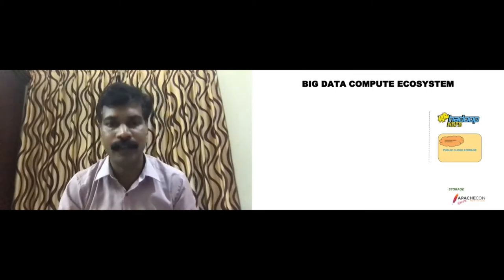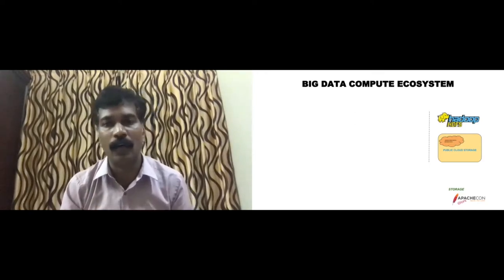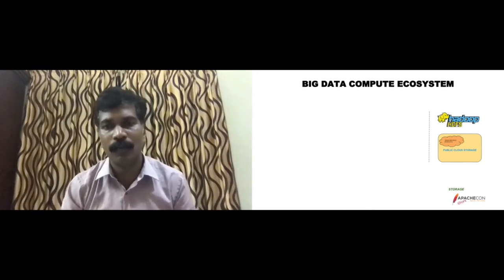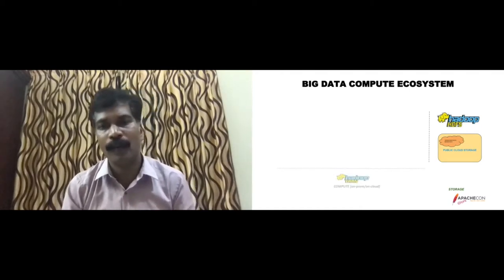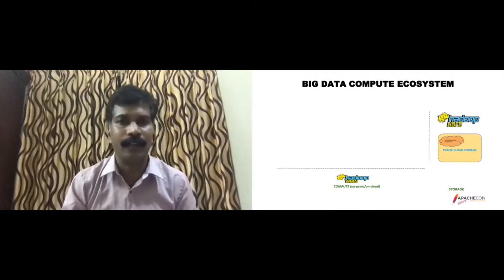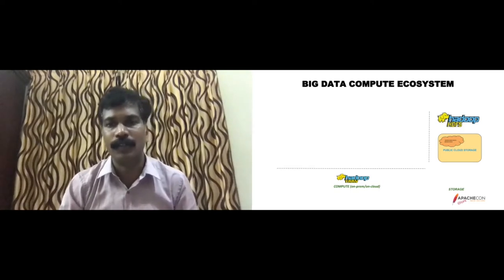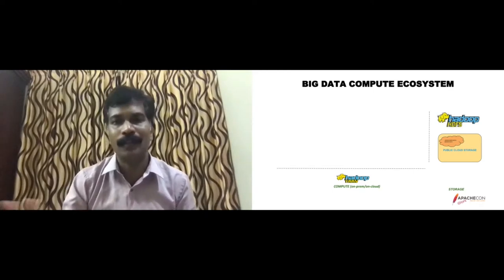We have data in data centers, and also much of the data is in private and public cloud storage such as S3, ABFS, or other cloud solutions. The data is pretty much there, and it may need to be pulled down or pushed up depending on your use case. On the compute side, you have Hadoop YARN, which can run on-prem in data centers and also on cloud — for example, on EC2 where you can spin up your own cluster and tap into public cloud storage or even HDFS.